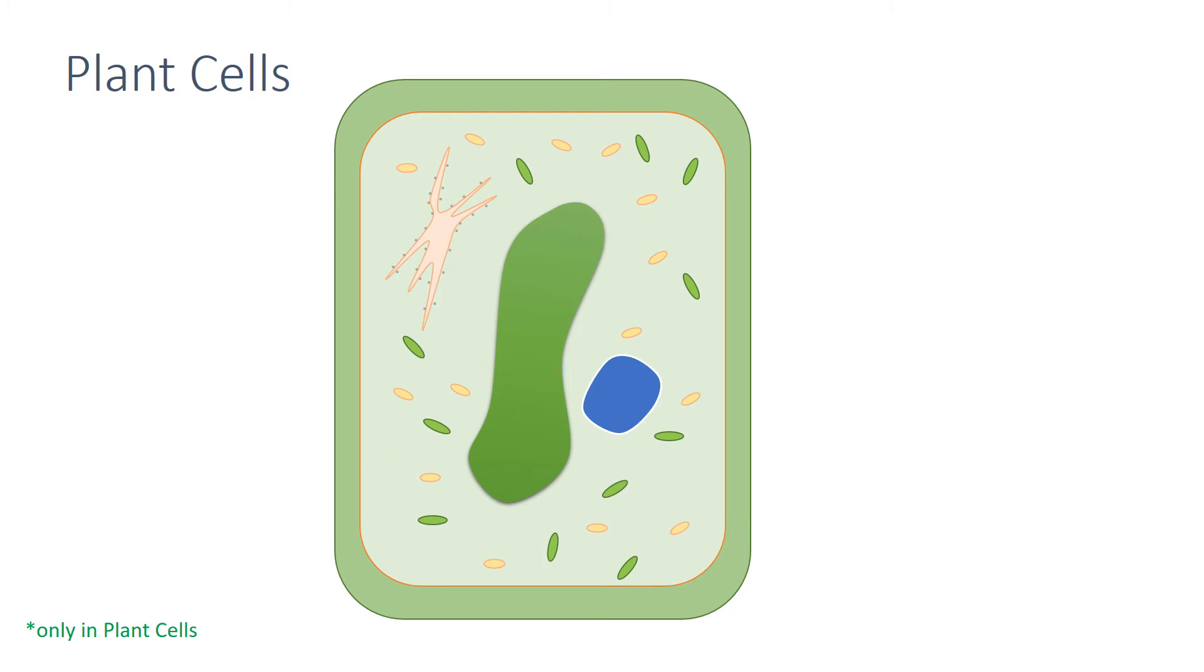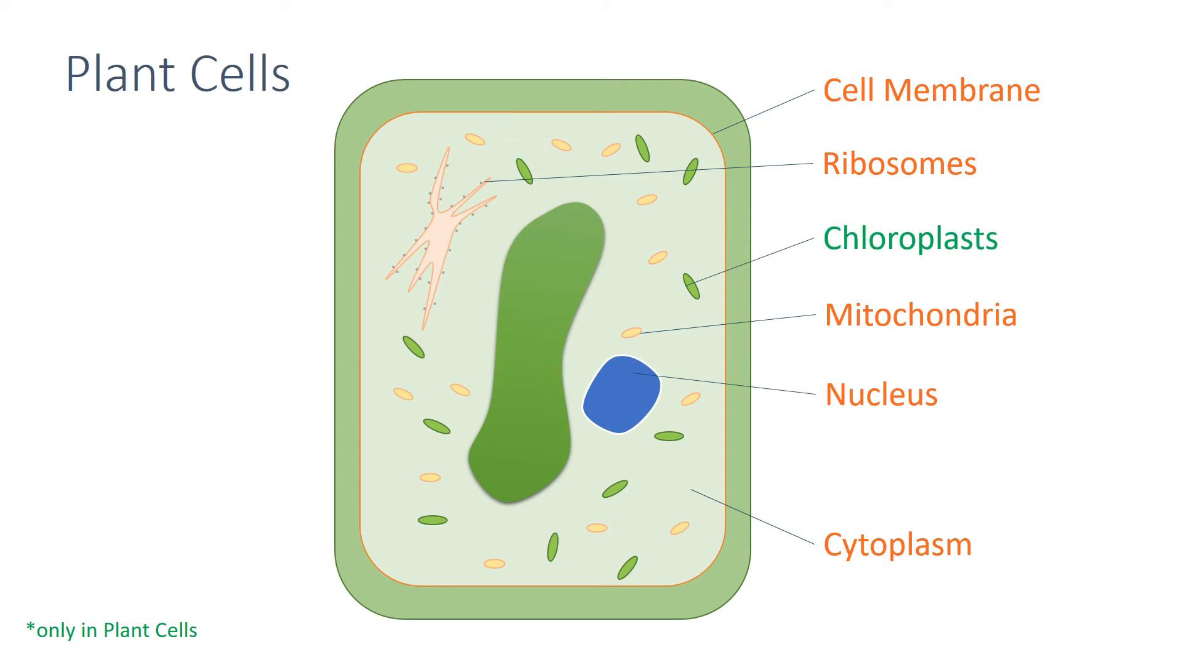In addition to the parts found in an animal cell, plant cells often have chloroplasts and a permanent vacuole which is filled with cell sap. Plant and algal cells also have a cell wall, which is made of cellulose, and it strengthens the cell.